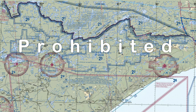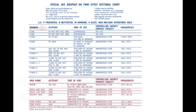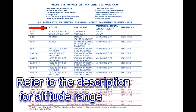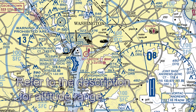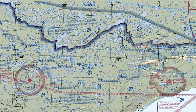Prohibited areas are just like they sound — you may not enter them. They are permanently established areas and printed on the sectional charts as a blue hashed outline with a P designator and a number. The details are found in the chart's legend. Examples include areas around the White House and sensitive national security sites, but also the Boundary Waters Canoe Area in northern Minnesota.